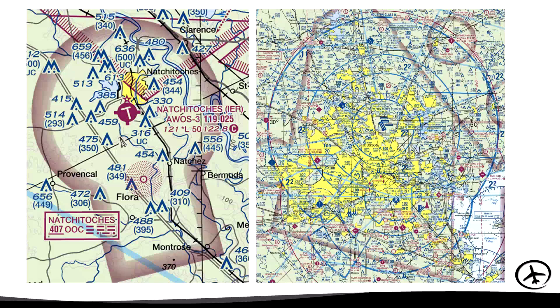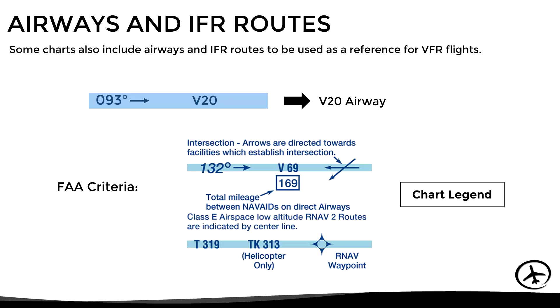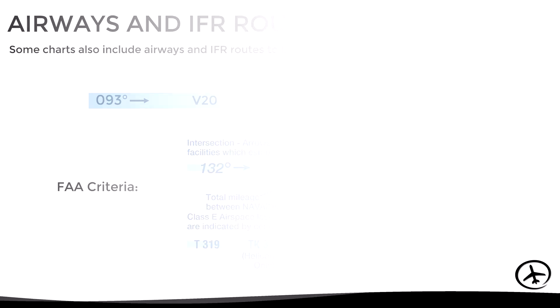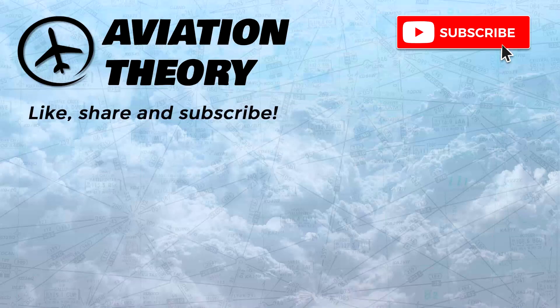Although most VFR charts do not include IFR routes and airways, some of them do, such as those developed by the FAA. Here we can see an example of how they are depicted in the charts. I hope the information presented in this video was useful — if so, don't forget to share, like, subscribe, and leave a comment down below. Thanks for watching.